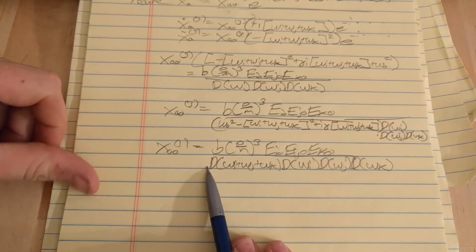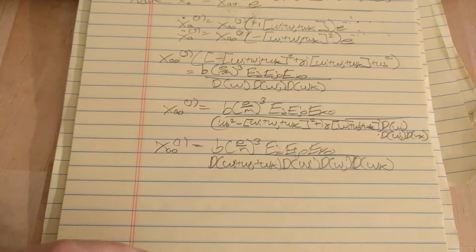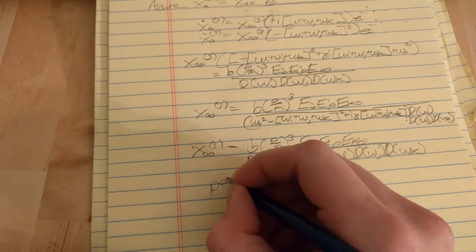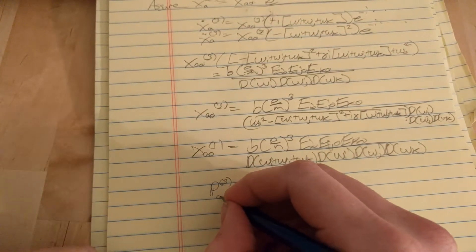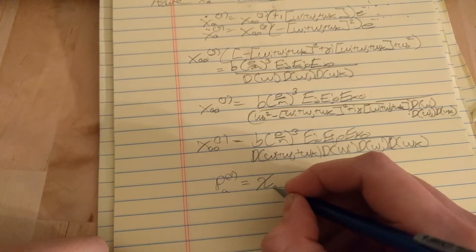So, now, as we did in previous videos, we say, okay, the polarization, third order polarization, we're doing component a, is equal to the susceptibility component a.